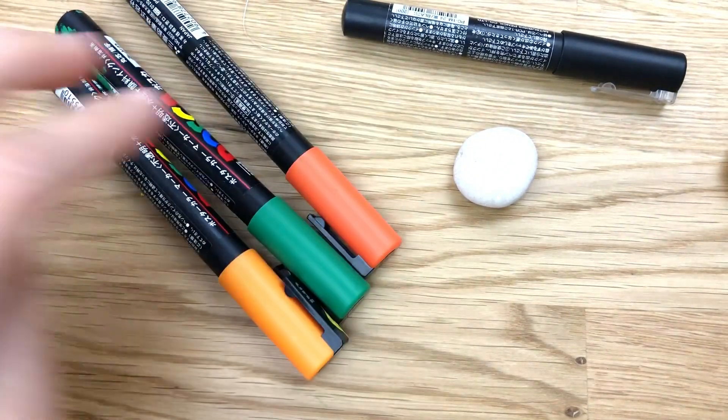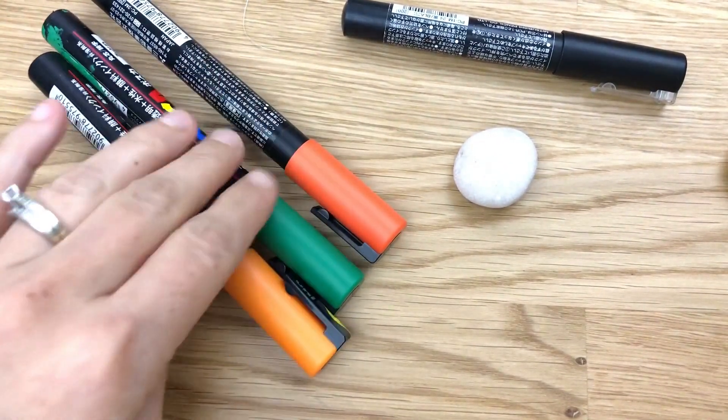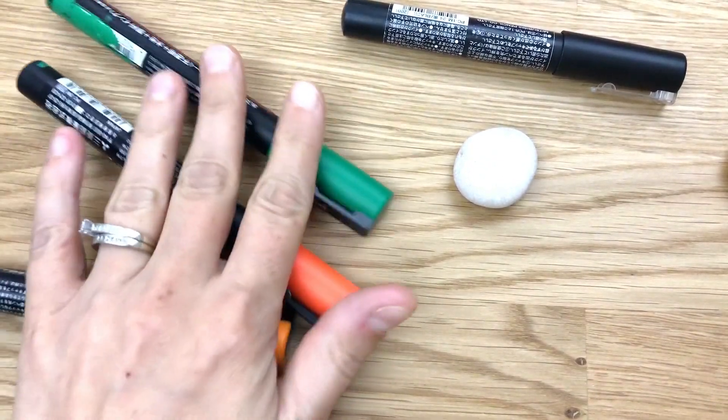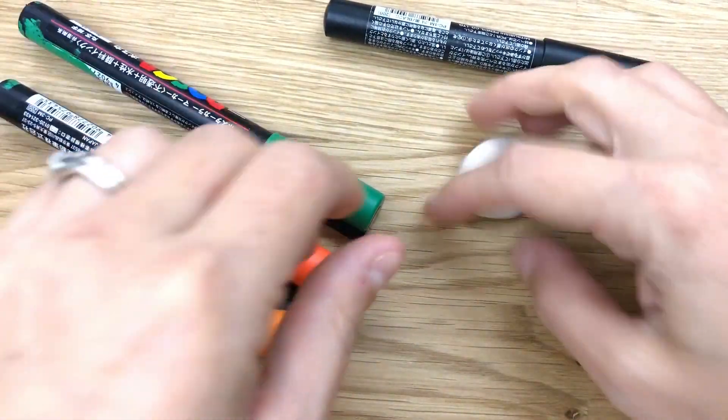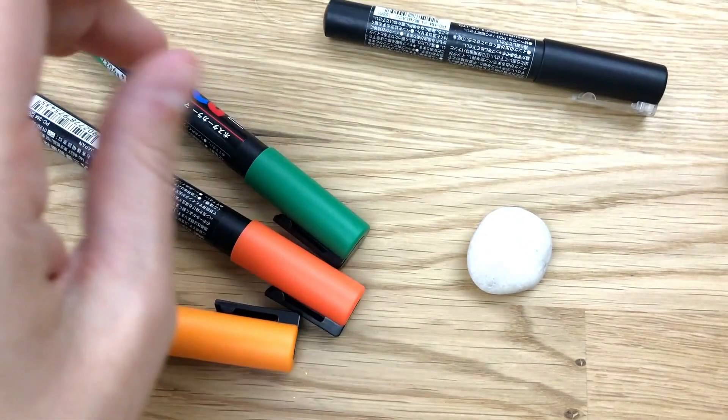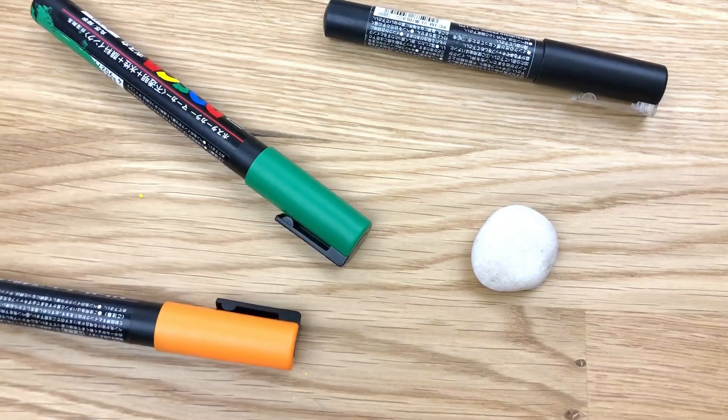So I've got just a dark orange, a lighter orange, and a green for our stem, and then I've got a black to do some lining. I'll probably put a little face on him too.